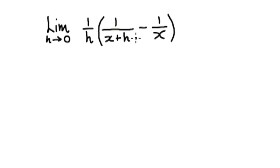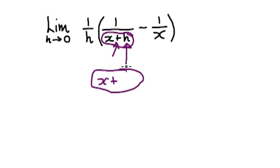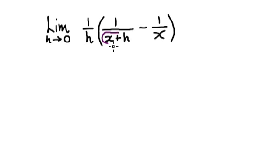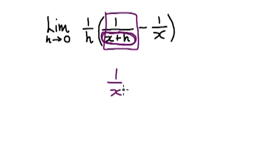Now, looking at this fraction here, you've got this bubble at the bottom. As h approaches 0, you can consider this bubble as being x — x plus, well, as h approaches 0, it's going to be near enough x plus 0. So you can consider this as being just x. As h approaches 0, you can consider this fraction as being 1 over x, because this bubble plus h, but h is heading towards 0, so you can just consider this to be 1 over x.